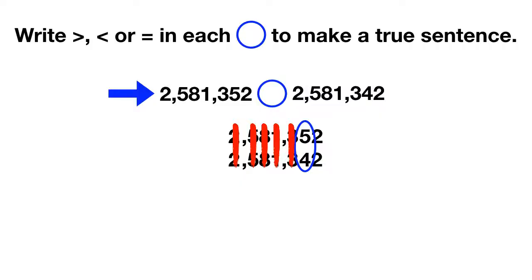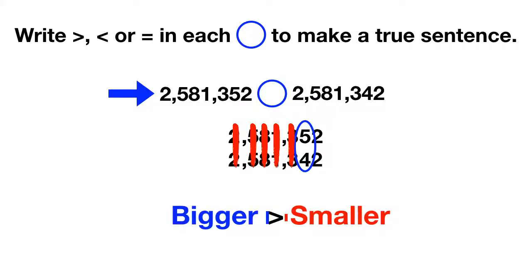Now remember, with your greater than or less than symbol, the big open side is the bigger number and the small pointy side is the smaller number. So to show that our first number is larger, write your greater than symbol like this.